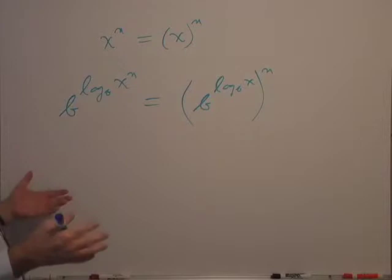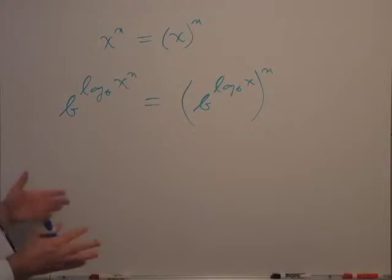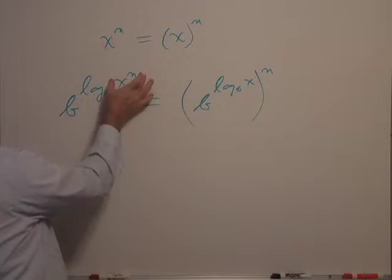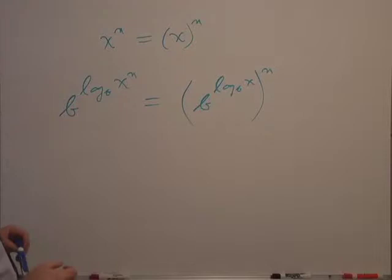So I use that property again about the inverse functions of logarithms to rewrite these quantities in this formulation. And in this case, this piece went here, but here I took x separately, and then n is on the outside of the parentheses.